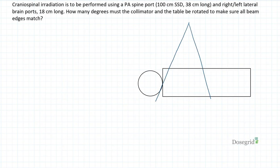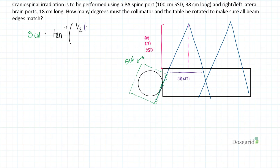Let's start with the collimator. The SSD is 100 cm and the length of the PA spine core is 38 cm. As we learned, the collimator angle is the inverse of tan times one-half the length of the spine field divided by the SSD.